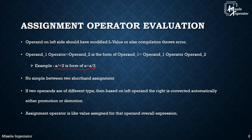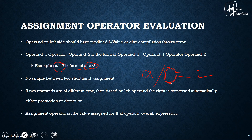There shouldn't be any space between the operator symbol and the equals sign in these compound assignment operators. If you try to use any space between them, that throws a compilation error. For example, if I write division and then a space and then equals, that throws an error. It should be written continuously — slash followed immediately by equals — that is the correct format.